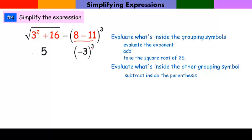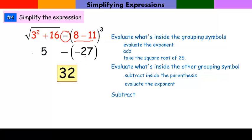I have a negative 3 raised to the third power. Negative 3 times negative 3 times negative 3 is a negative 27. And now I still have this. I have a 5 minus a negative 27 is a positive 32.